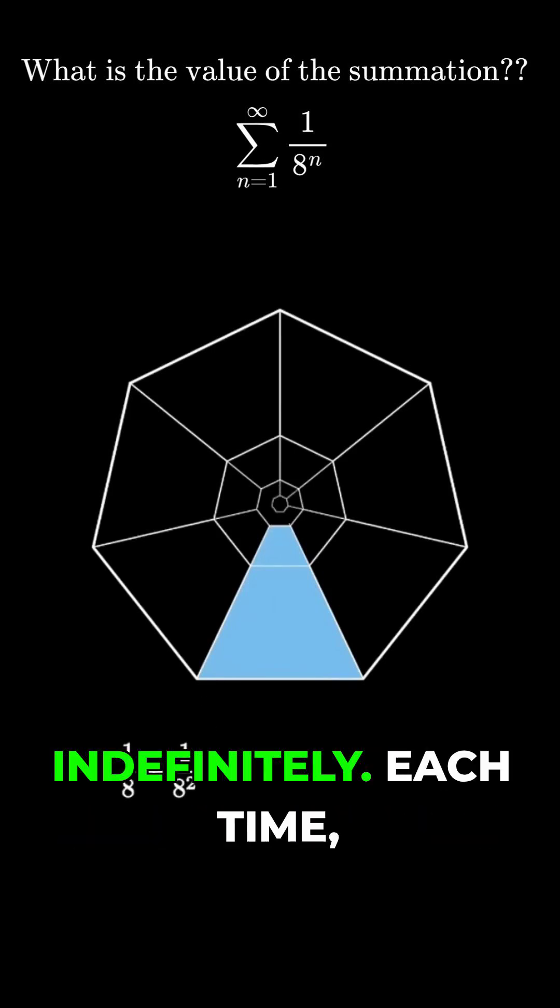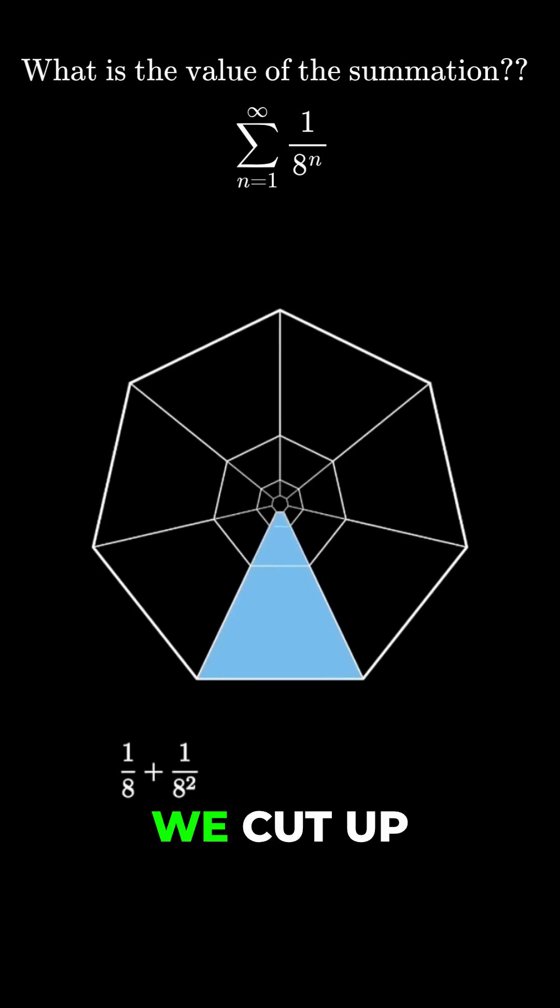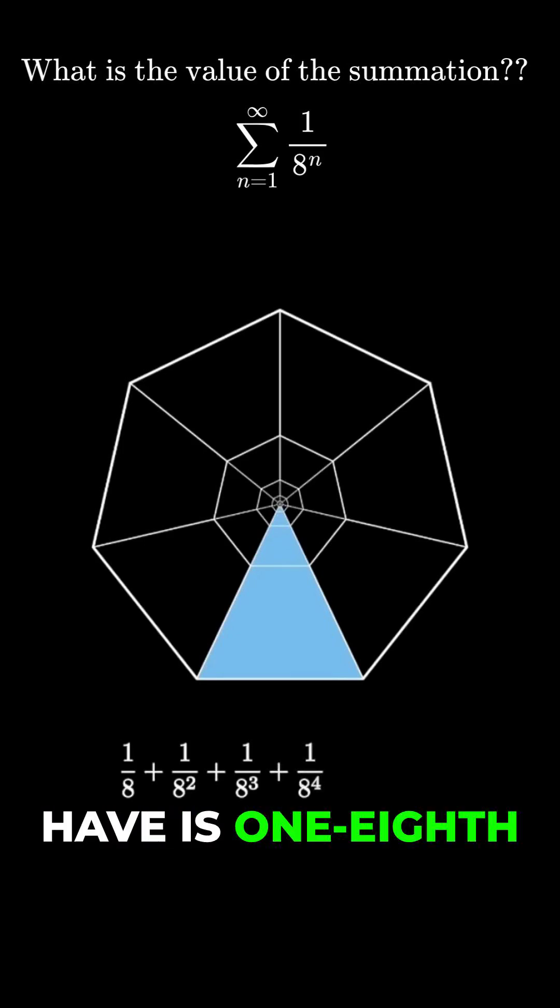We can continue this process indefinitely. Each time we cut up the heptagon into eight equal area pieces and take one of them. This means that each piece we have is one-eighth of the previous one-eighth of the area.